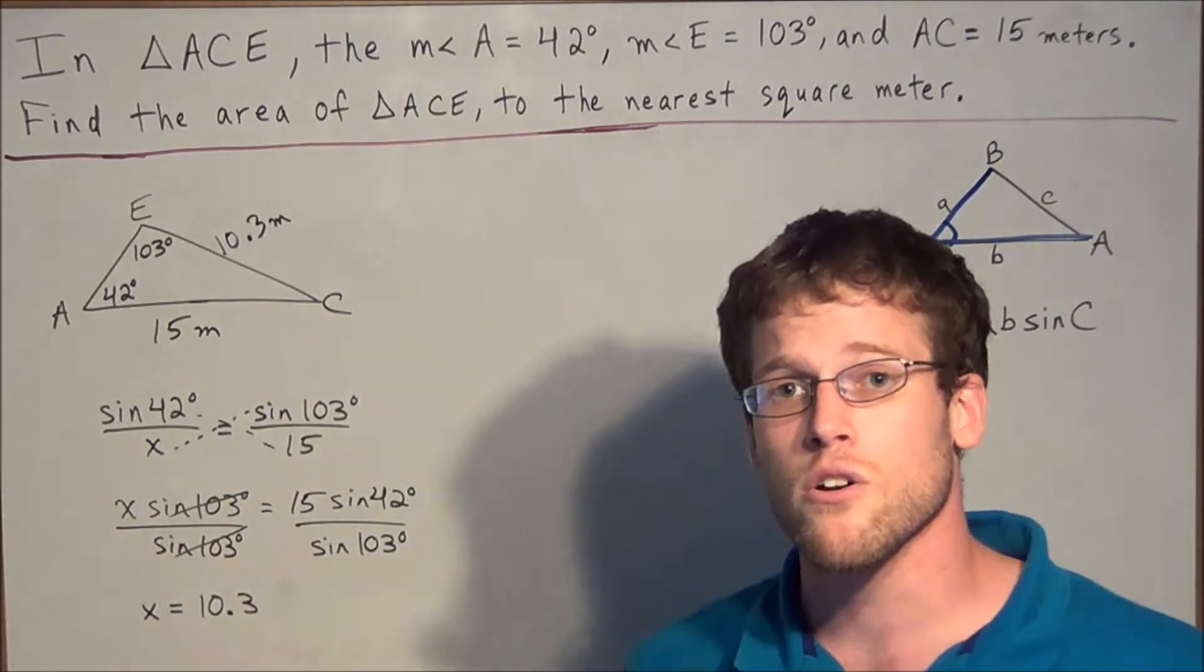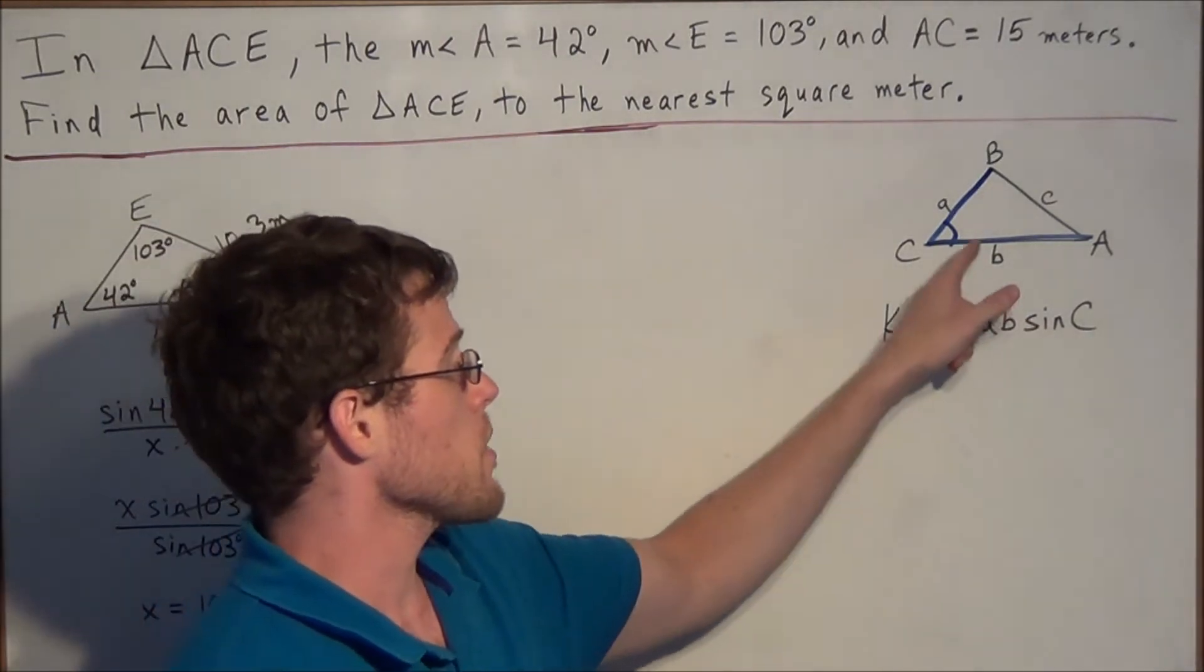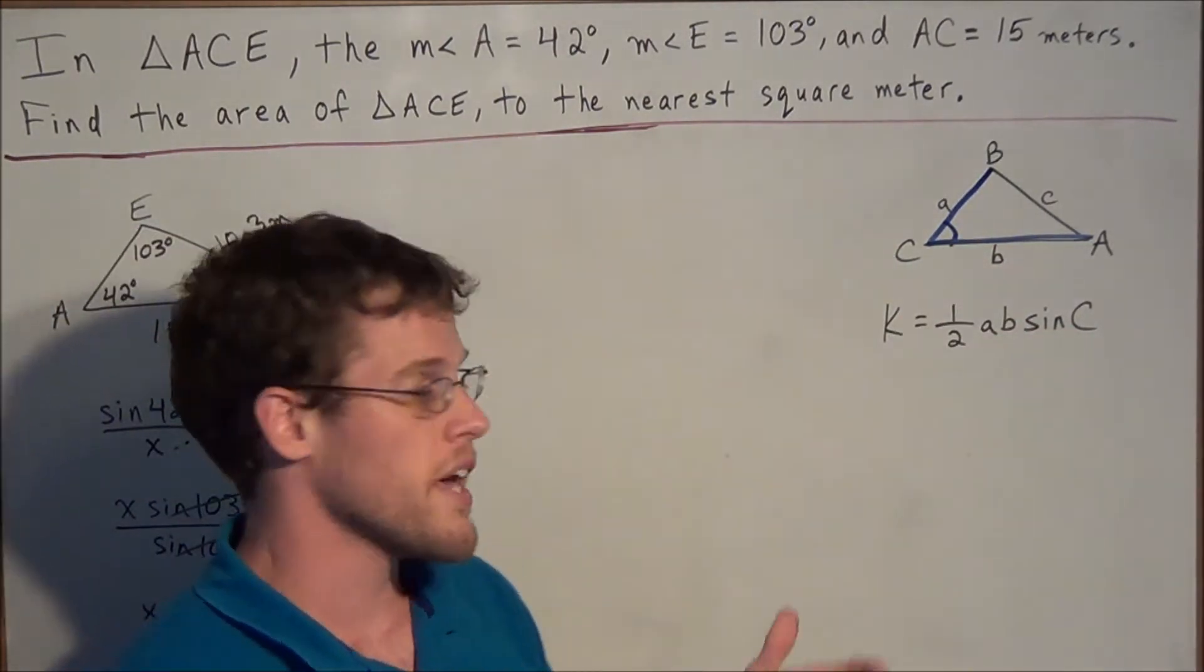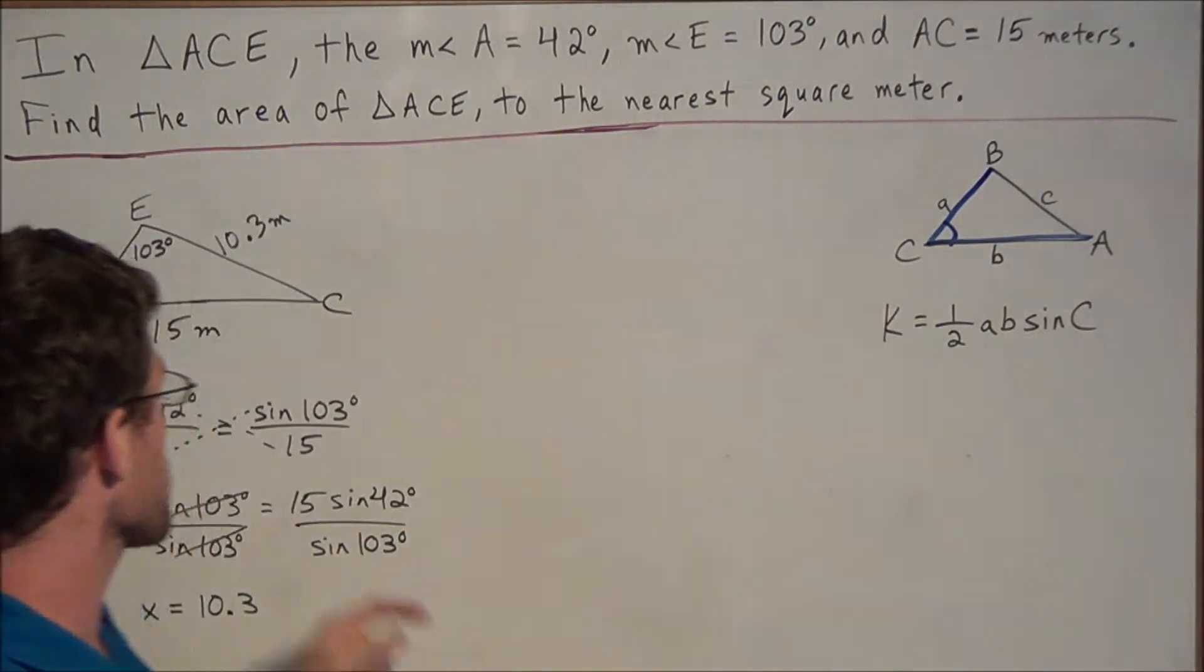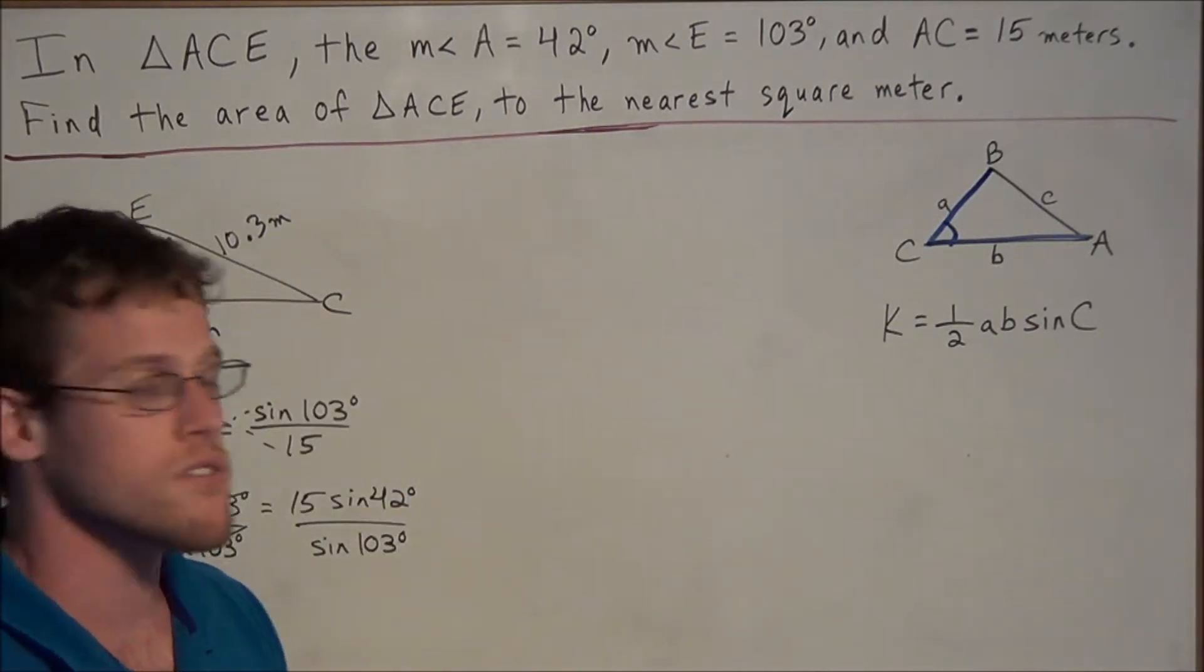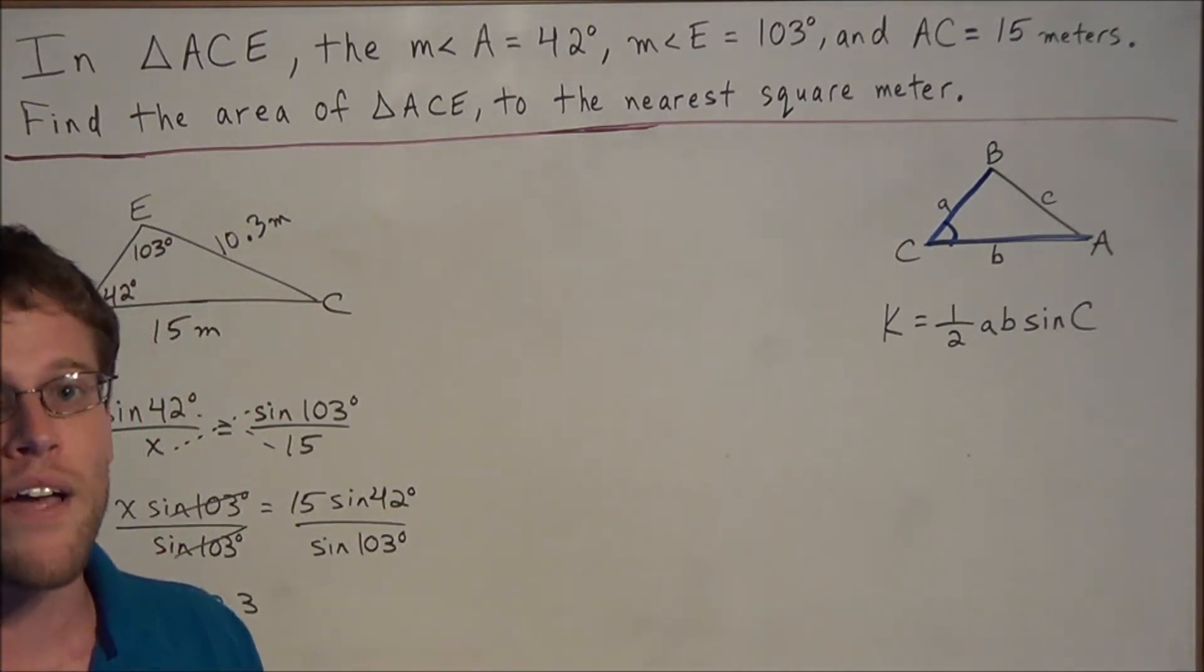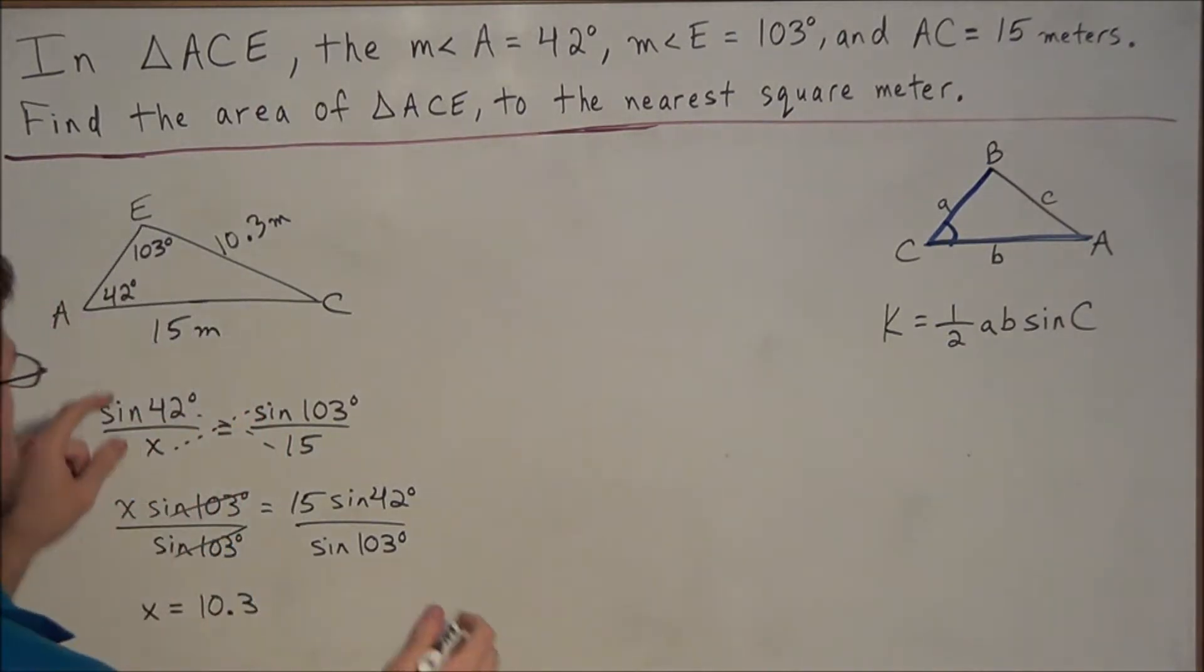But now we're much closer to being able to use this equation. But remember, the angle that we need to use is included. That is, it's between the two sides that we know. So since we're going to be using 15 meters and 10.3 meters, we need to know the measure of angle C. So we're going to use the fact that the sum of the interior angles of any triangle is 180 degrees.